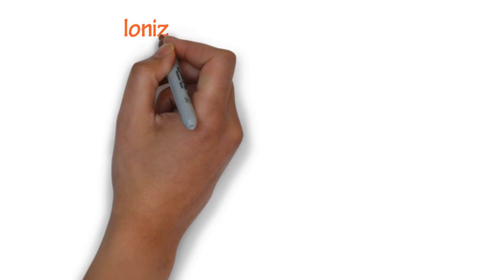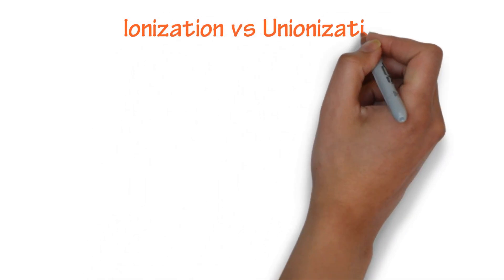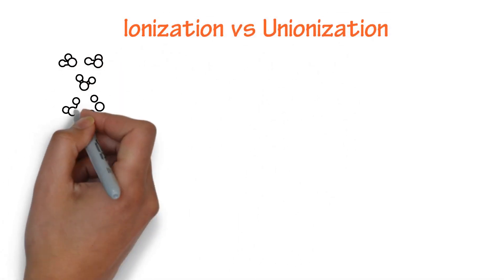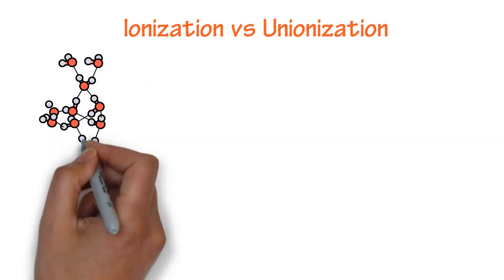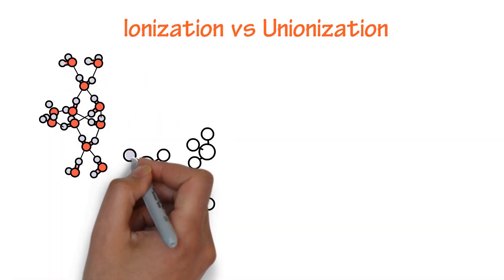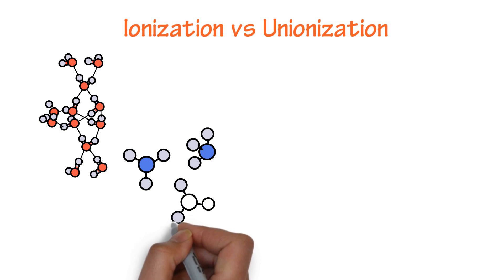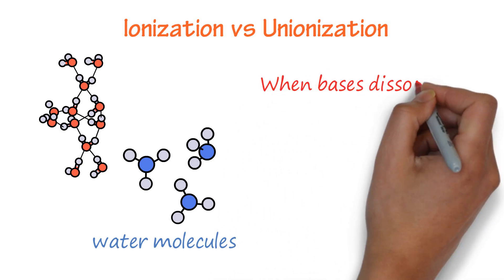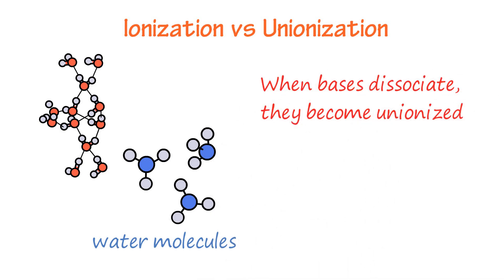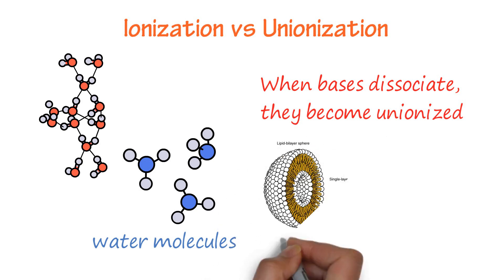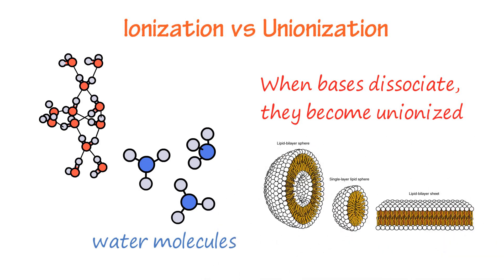Ionization versus unionization. When acids dissociate, they become ionized. Charges on biological membranes bind or repel ionized drug and associate with water molecules, creating larger particles with reduced penetrating capability. When bases dissociate, they become unionized, penetrate biological membranes more easily than ionized, and are more lipid soluble.